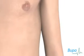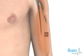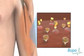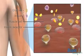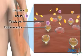Insulin helps cells in your body tissues, such as muscle cells, to absorb glucose. Tissues need glucose in order to function.